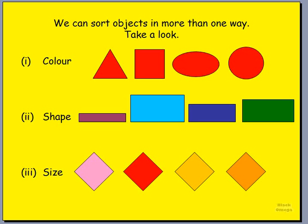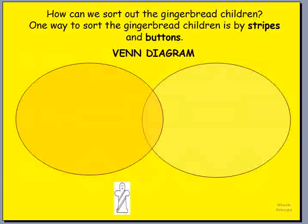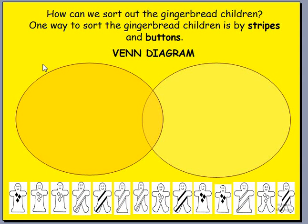Let's try a little exercise so you can demonstrate that you know what we're talking about — that you know the different ways in which you can sort out objects. Take a look. If you look at the bottom of the screen, we have a bunch of gingerbread children. They look very similar, almost all the same, but there are a few things that are different about each and every one of them. So how can you help me sort out the gingerbread children?